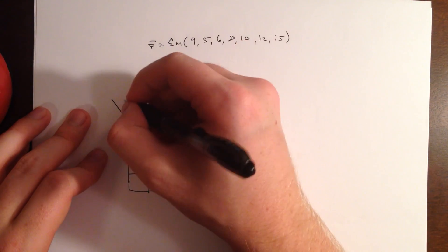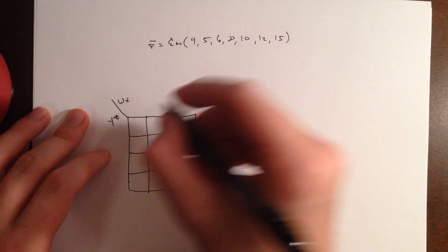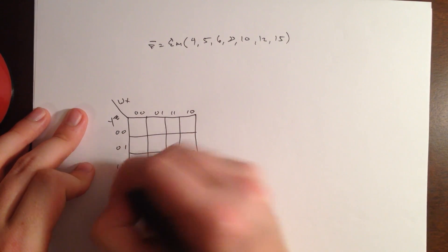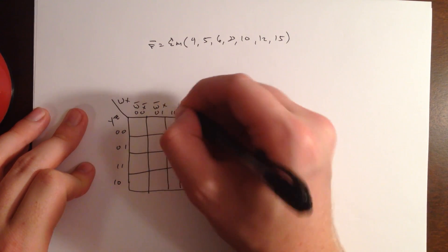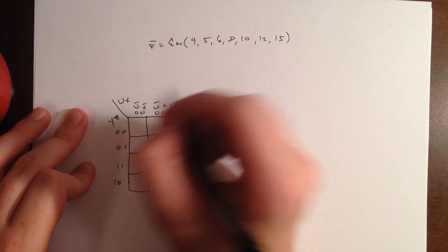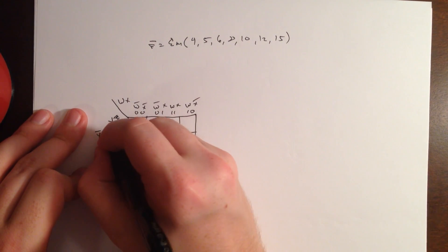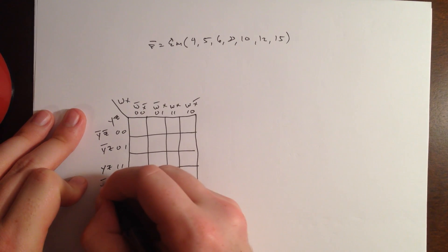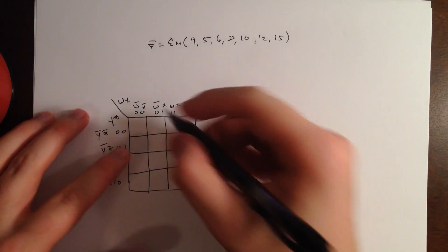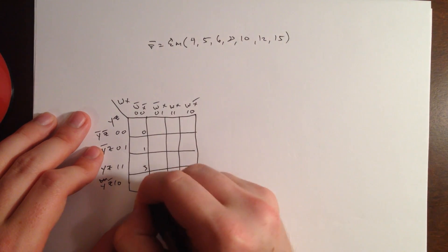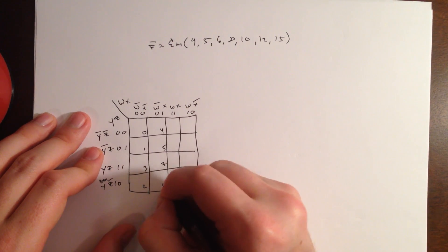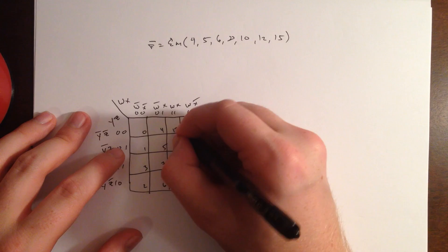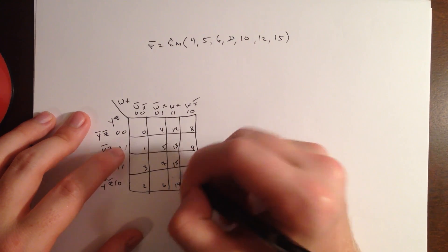We'll make our K map, just like that. Go ahead and label everything the same way, so we had wx, yz, 0, 0, 0, 1, 1, 1, 1, 0, 0, 0, 0, 1, 1, 1, 1, 0. So, it's w', x', w'x, wx, wx'. And this will be y'z', y'z, yz, yz'. And then our terms are going to be the same, so 0, 1, 3, 2, 4, 5, 7, 6, 8, 9, 11, 10, and then 12, 13, 15, 14.